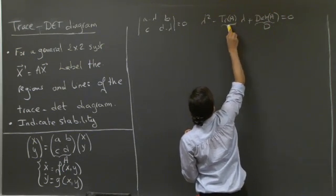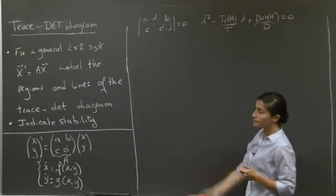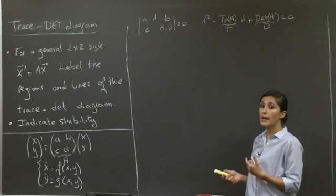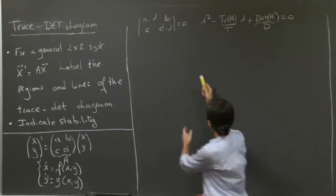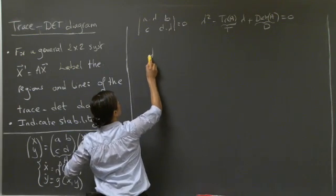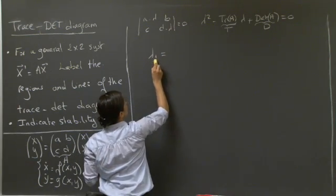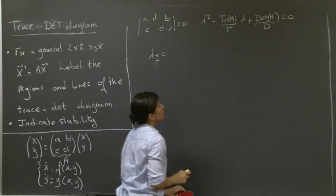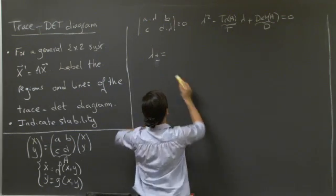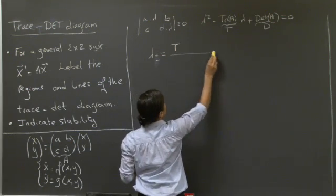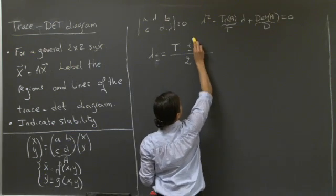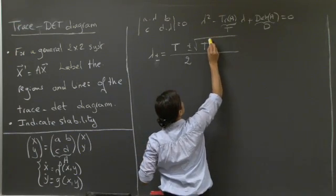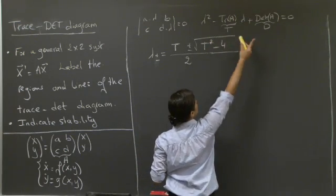Let's call the determinant d and the trace t. The trace of A is the sum of the diagonal entries, and the determinant for a 2x2 matrix is ad - bc. The solutions λ± are given by [t ± √(t² - 4d)] / 2.